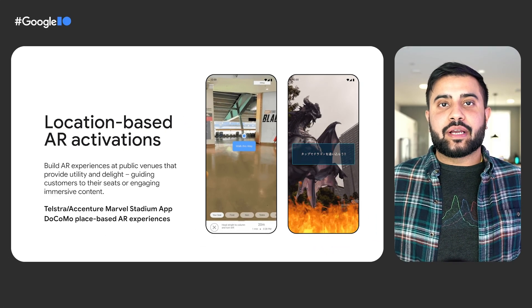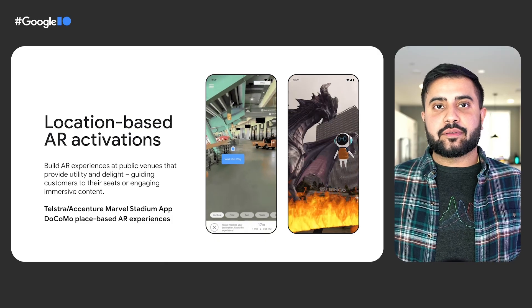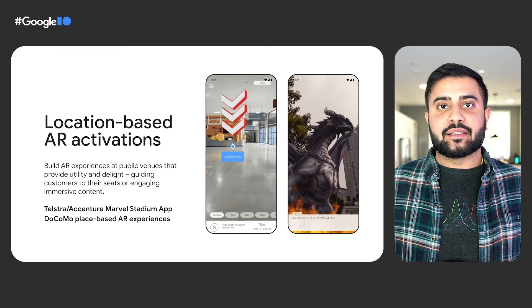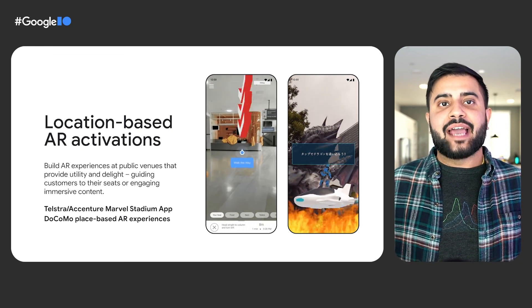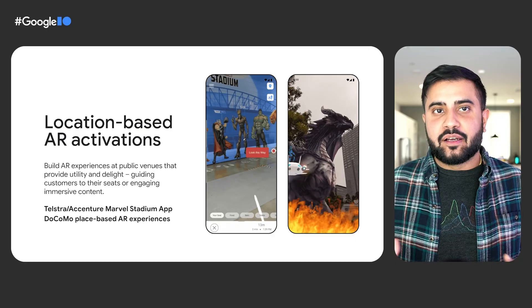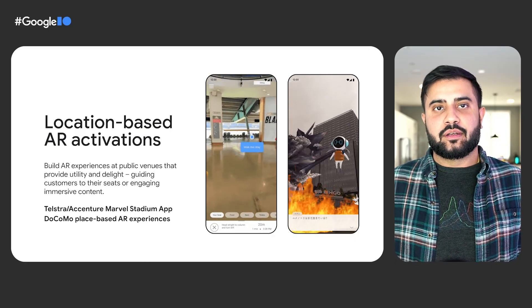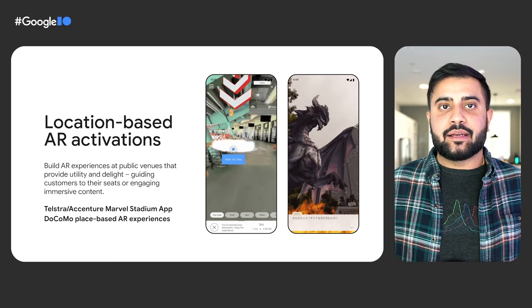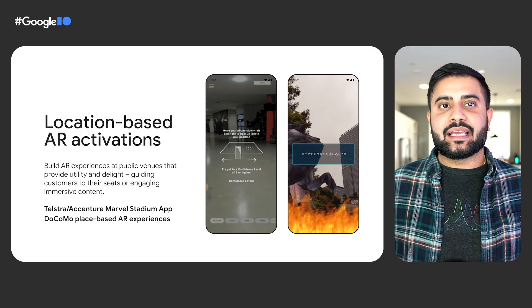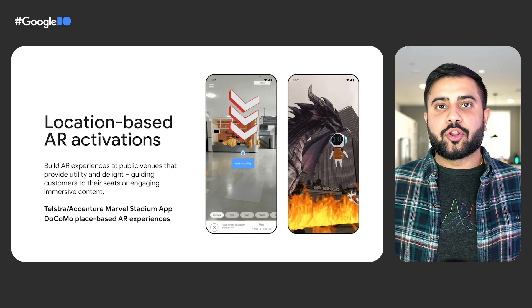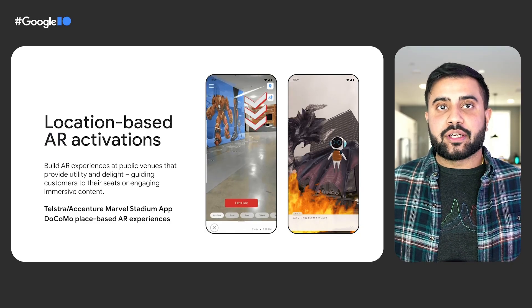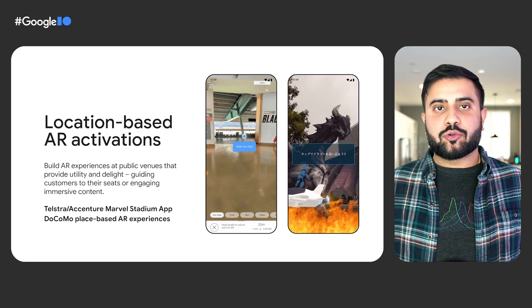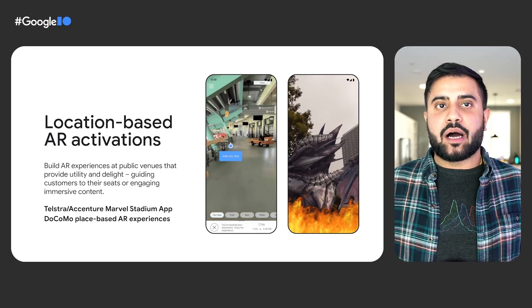The next vertical is location-based AR experiences. Thanks to our API, developers can focus on creating compelling user experiences that provide utility and delight without needing to build and maintain maps of multiple locations. Telstra and Accenture are creating a companion app for Marvel Stadium that brings customers to their seats while showcasing engaging immersive content along the way. Docomo and Curiosity are turning Tokyo hotspots into an immersive world where you can fend off virtual dragons with your favorite robot companion.